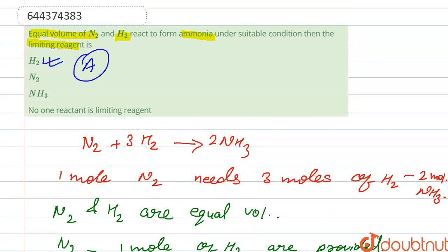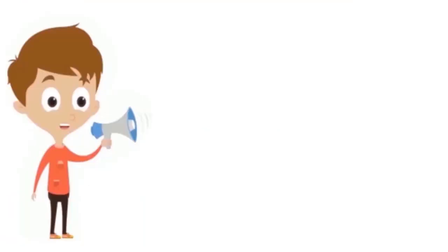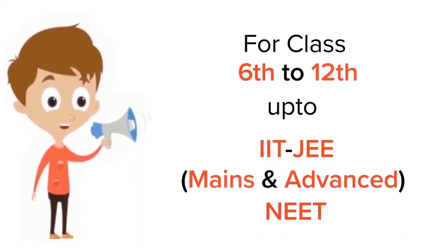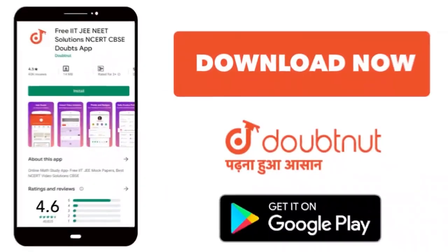So our correct option is option A. Thank you. For class 6th to 12th, IIT-JEE and NEET level, trusted by more than 5 crore students, download Doubtnut app today.